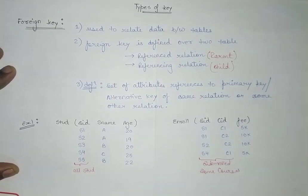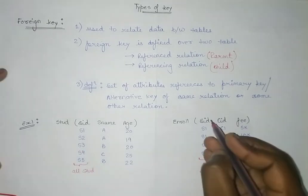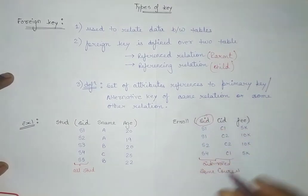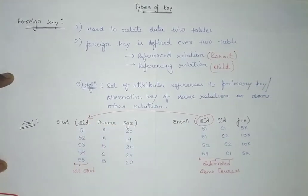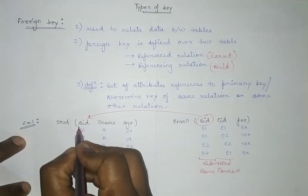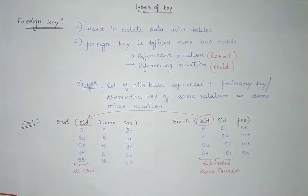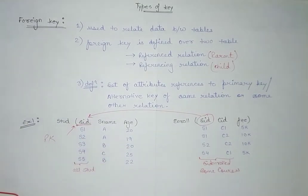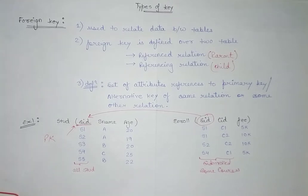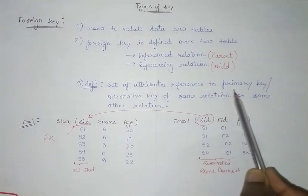The student ID in the Enrolled table refers to the students who have enrolled in some courses. This student ID in the Student table is a primary key — it is unique and has no null values, so it is both a candidate key and a primary key.